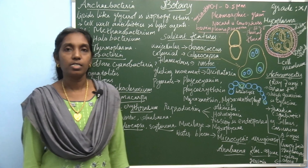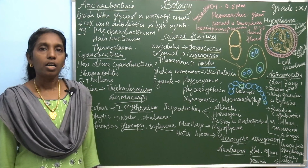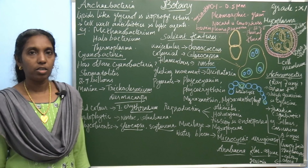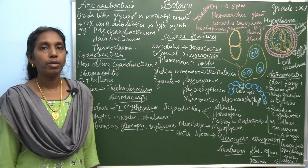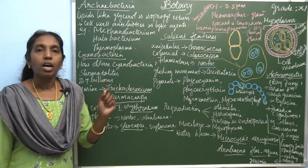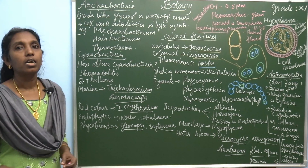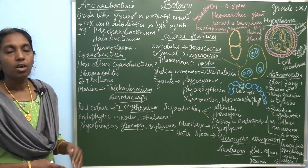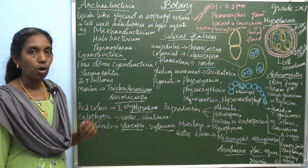Before learning cyanobacteria, let's see what archibacteria are. Archibacteria are primitive prokaryotic organisms which adapted to thrive in extreme environmental conditions like high salinity, high temperature, or low pH.